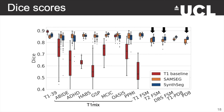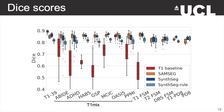We believe there are two reasons why SynthSeg does well. First, it has been exposed to high variability during training by sampling a different random contrast at each mini-batch, and therefore it better generalizes at test time. Second, the training examples are perfectly aligned with their corresponding segmentations, because images were directly generated from label maps. Therefore, SynthSeg doesn't suffer from segmentation mistakes that typically occur when training with real images and manual delineations. Looking at SynthSeg-rule, we see that it is outperformed by SynthSeg for all datasets. This may be counter-intuitive because SynthSeg-rule was tuned to mimic the contrast of the testing data. But we think this shows that augmenting data beyond realistic measures enables networks to learn more robust features that do not rely on absolute intensities, and thus better generalize during testing.